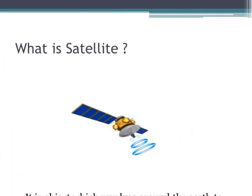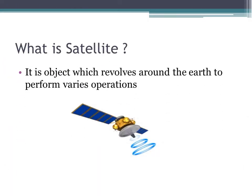What is a satellite? It is an object which revolves around the earth to perform various operations such as GPS, DTH, navigation, and so on. In this application, the satellite revolves around the earth in geosynchronous earth orbit, which is far away from the earth. The total distance between geosynchronous earth orbit and earth is 36,000 kilometers, and the satellite in this orbit requires 24 hours to complete one cycle.